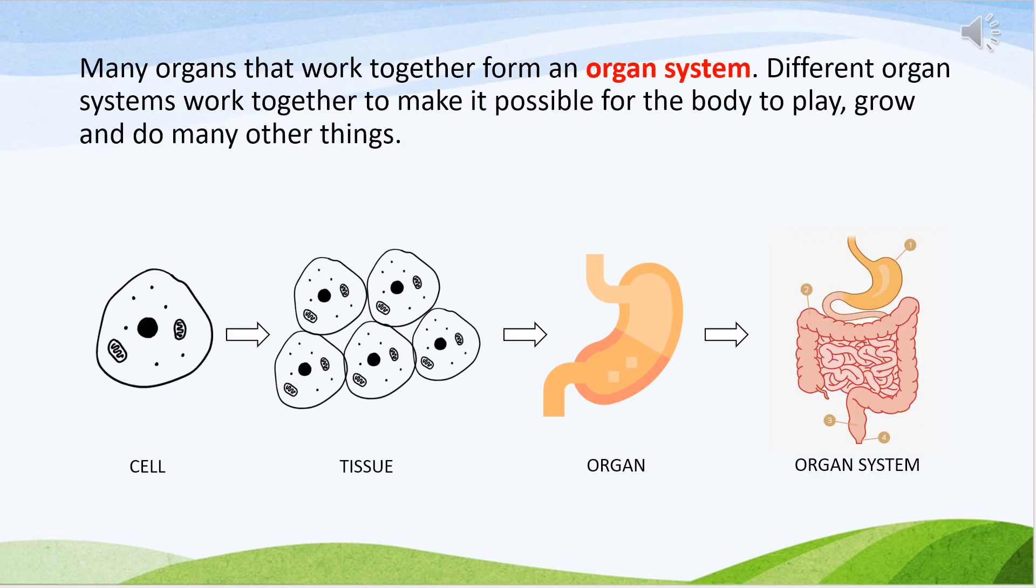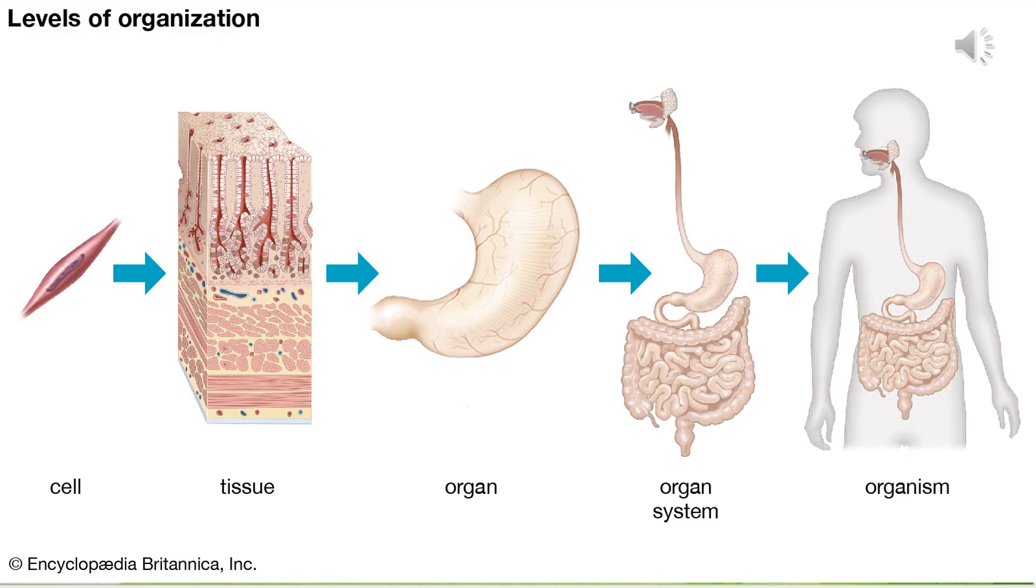Lastly, many organs together form an organ system. Many different organ systems are present in the human body. Different organ systems work together to make it possible for the body to play, grow and do many other things.